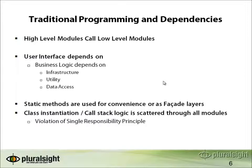It's much simpler for a business logic method to call a static SaveCustomer method on a data access layer than to implement 20 lines of ADO.NET code itself. These can represent dependencies that are very tricky to extract. Finally, class instantiation and call stack logic scattered throughout the application violates the Single Responsibility Principle, because every class deciding who its collaborators are — through static methods or the new keyword — is now responsible not just for its actual work, but also for determining who it's working with.